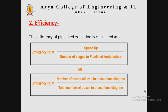The second parameter is efficiency. The efficiency of the pipeline execution is calculated using the formula: efficiency E equals speed up divided by the number of stages in the pipeline architecture. Alternatively, efficiency E equals the number of boxes utilized in the phase-time diagram divided by the total number of boxes in the phase-time diagram. With these two formulas we can calculate the efficiency of the pipeline execution.